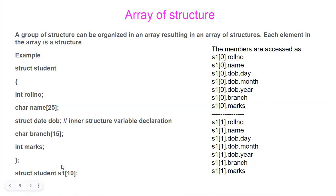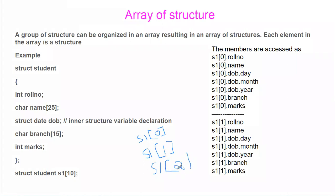You can access each element like s1[5]. So s1[0] will be one structure of this type, s1[1] will be another one, and so on. Each s1[0], s1[1], s1[2] is a separate structure of the same type. Defining s1[10] is similar to declaring 10 different variables s1, s2, s3, etc., but instead using the same name followed by the index.